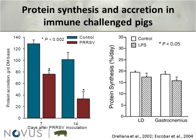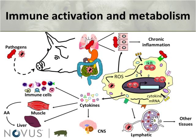These are data from Dr. Renan Orellana. We're looking at protein synthesis in two primary muscles: the longissimus dorsi, which is primarily a white muscle fiber type, and the gastrocnemius, primarily a red muscle fiber type. In animals challenged or stimulated with LPS, we see a significant reduction in protein synthesis. So part of what causes this reduction when animals are sick is a physiological reduction in the capacity of these animals to actually synthesize protein.